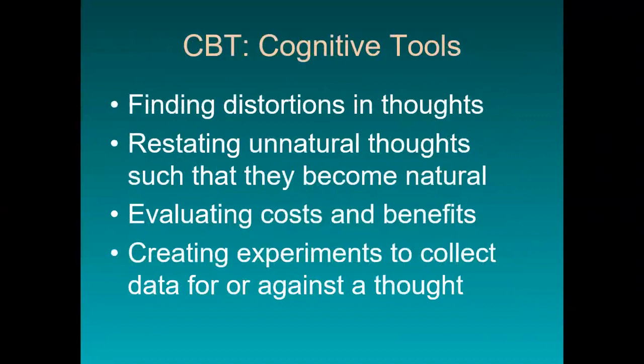We can also set up some experiments to collect data for or against a particular thought. Our brains pay a lot of attention to data. So if we have the thought that a person probably doesn't like me, we could run an experiment, approach that person, and get some data about how they respond. When my patients run these kinds of experiments in their own lives, they almost always start to get tremendously excited. They become scientists in the laboratories of their lives instead of passive victims of their circumstances.